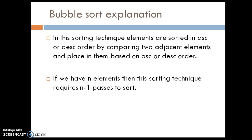In bubble sort, elements are sorted in ascending or descending order as per the user requirement. How are they sorted? By comparing two adjacent elements and placing them based on ascending or descending order. The key point is: by comparing two adjacent elements, we will swap them if one element is greater or lesser, and then we will go to the next pass.